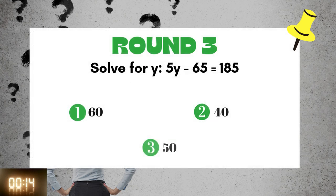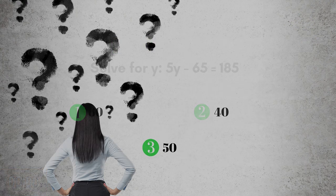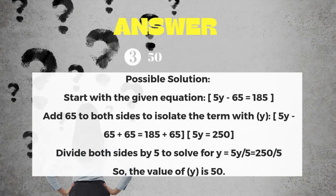Round 3: Solve for y: 5y minus 65 equals 185. The answer is 50.